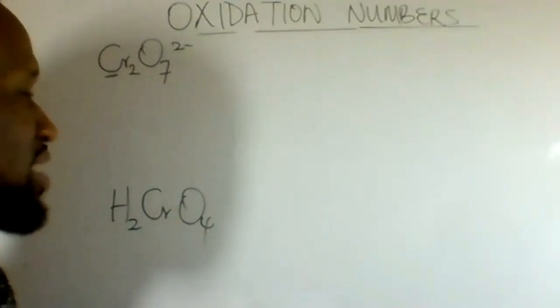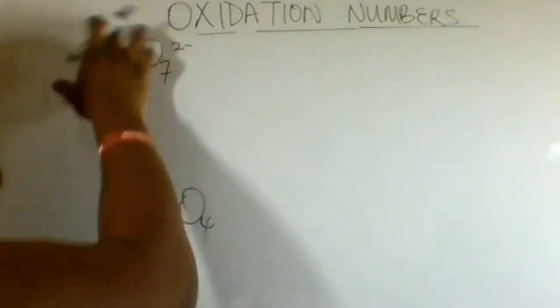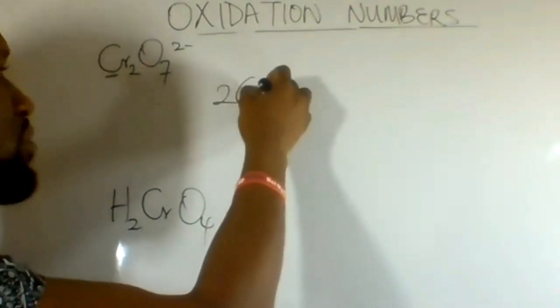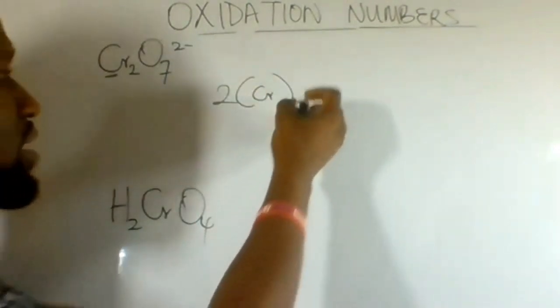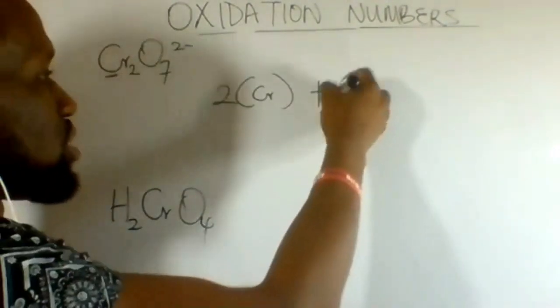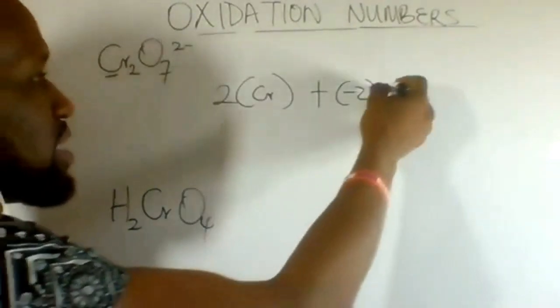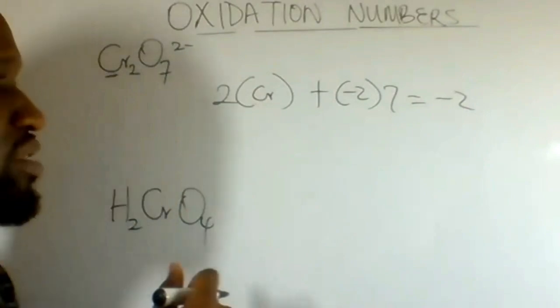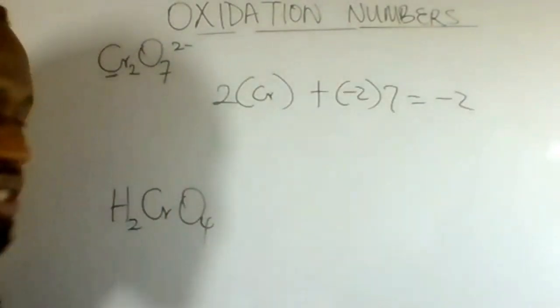To calculate the oxidation number of chromium in dichromic ions, add the oxidation number of chromium which we are looking for, Cr, added to oxygen which is minus 2 multiplied by 7 equal to minus 2. Because if Cr₂O₇ is 2 minus, everything left together should equal minus 2.